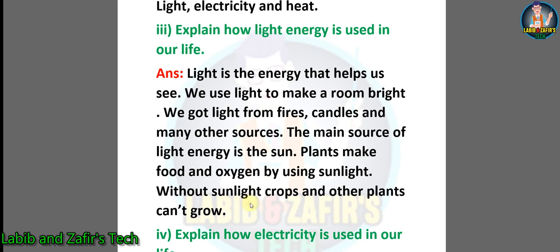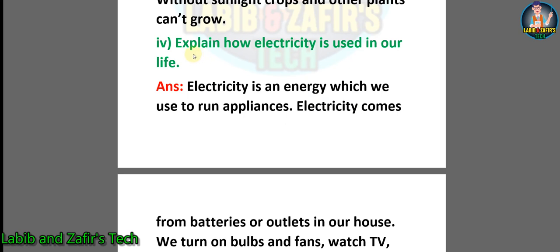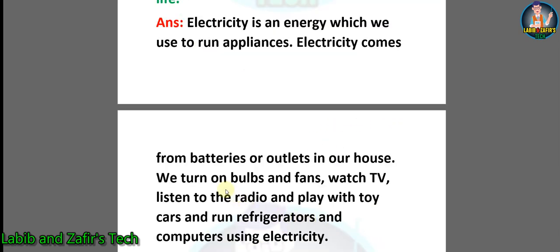Without sunlight, crops and other plants can't grow. Number four: explain how electricity is used in our life. Answer: electricity is an energy which we use to run appliances. Electricity comes from batteries or outlets in our house.